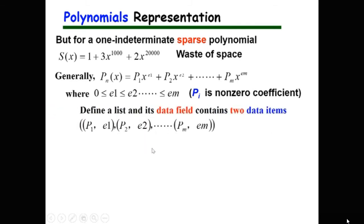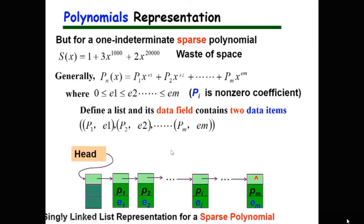Then we can define a list where each element has two data items. We can use a singly linked list to represent a sparse polynomial. In this representation, each node's data field has two members.